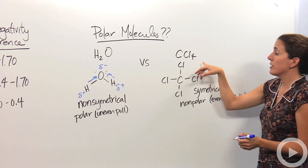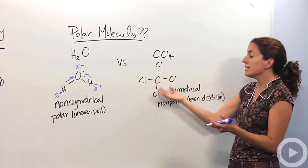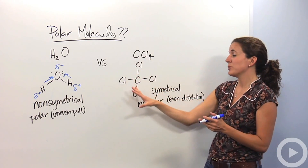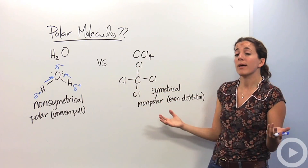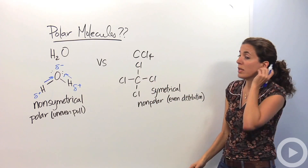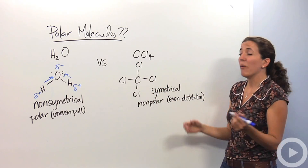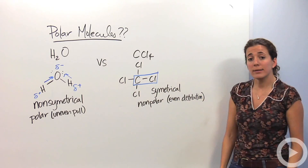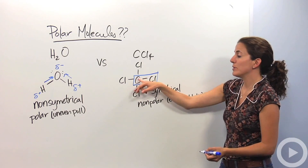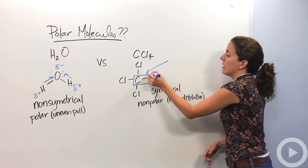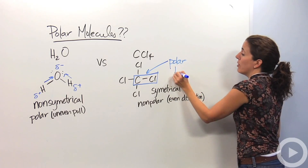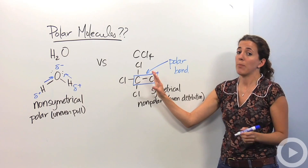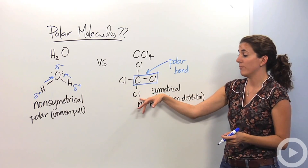If we go over to carbon tetrachloride, it is very symmetrical. Overall, the electron distribution across this molecule is even — there's no one side being more polar than the other. However, if you look at just the carbon-chloride bond, the electronegativity difference is pretty great, so that is a polar bond. So you can have polar bonds within a nonpolar molecule. That does happen and this is an example of that.